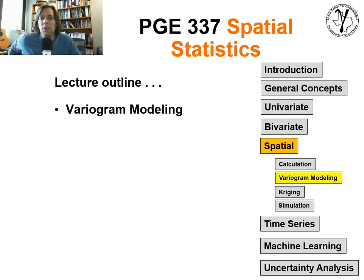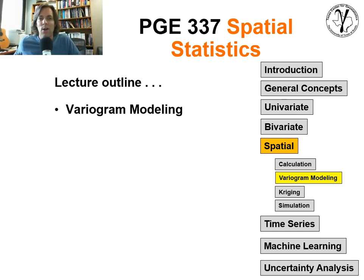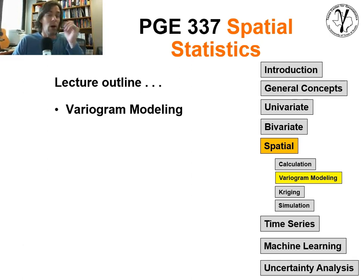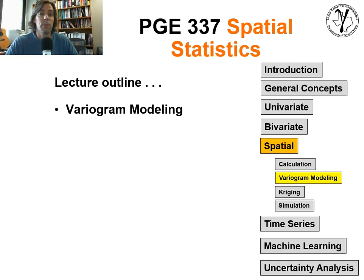Hey, howdy everybody. Well, you knew this day would come. We did the calculations of variograms, we talked about interpretation, and now variogram modeling. This is critical because, right at the very beginning, we introduced this idea that spatial continuity matters, we've got to be able to quantify it, and now we've got to be able to model with it. So variogram modeling is all about how do we take a measure of spatial continuity and make it into a model that we can use for the purpose of spatial estimation and simulation.